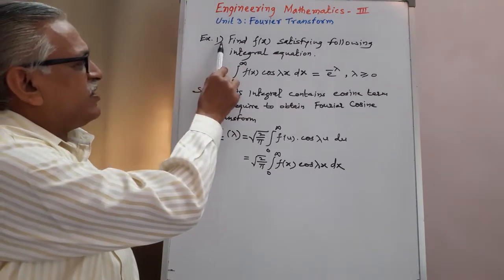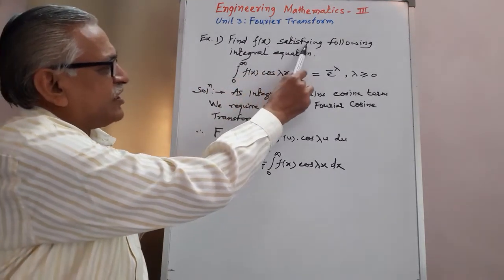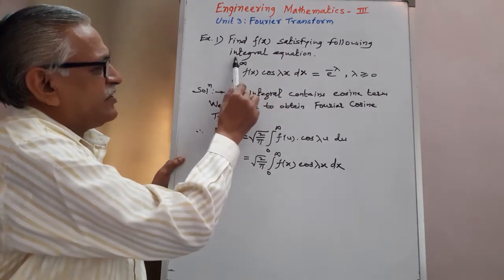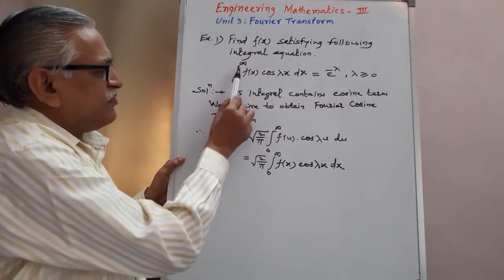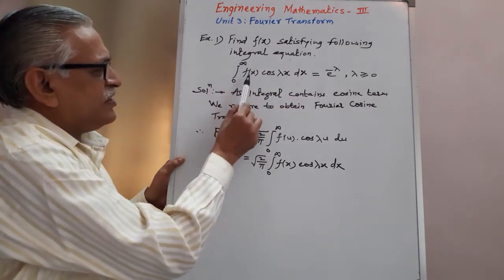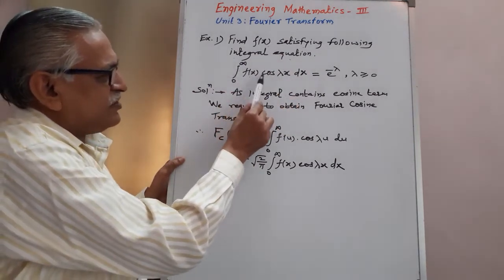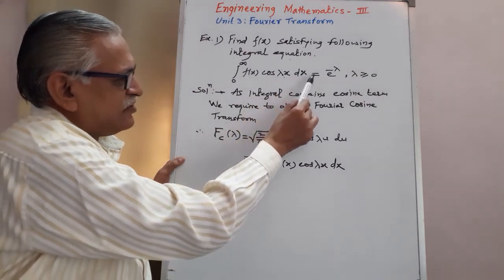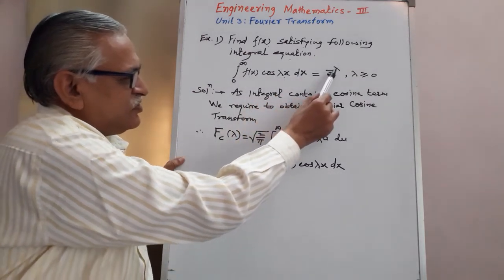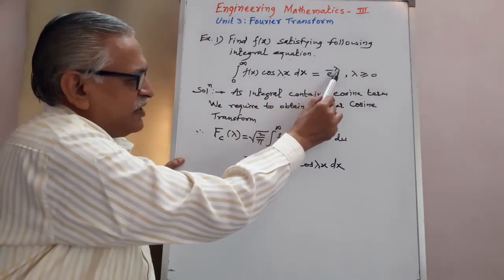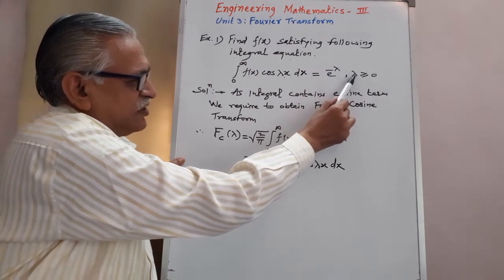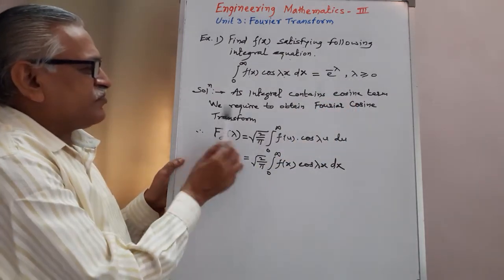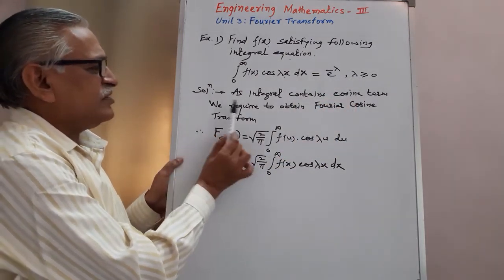Example number one: find f of x satisfying the following integral equation. Integration from zero to infinity of f of x into cos of lambda x dx is equal to e raised to minus lambda, for the condition lambda greater than or equal to zero. Solution: